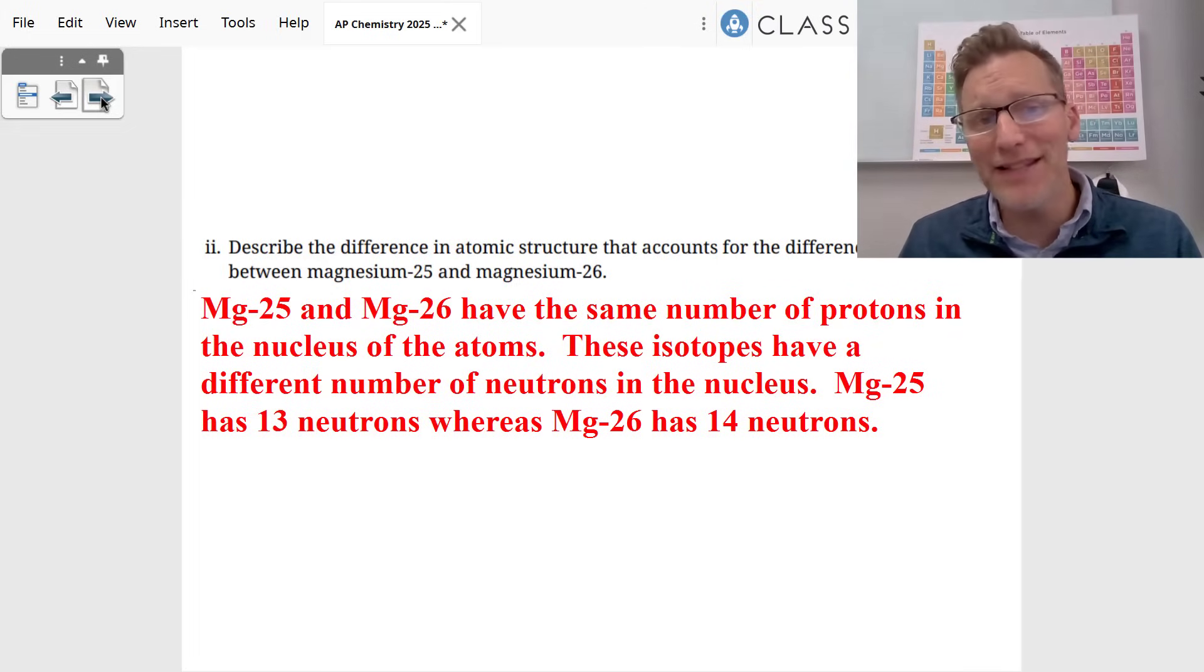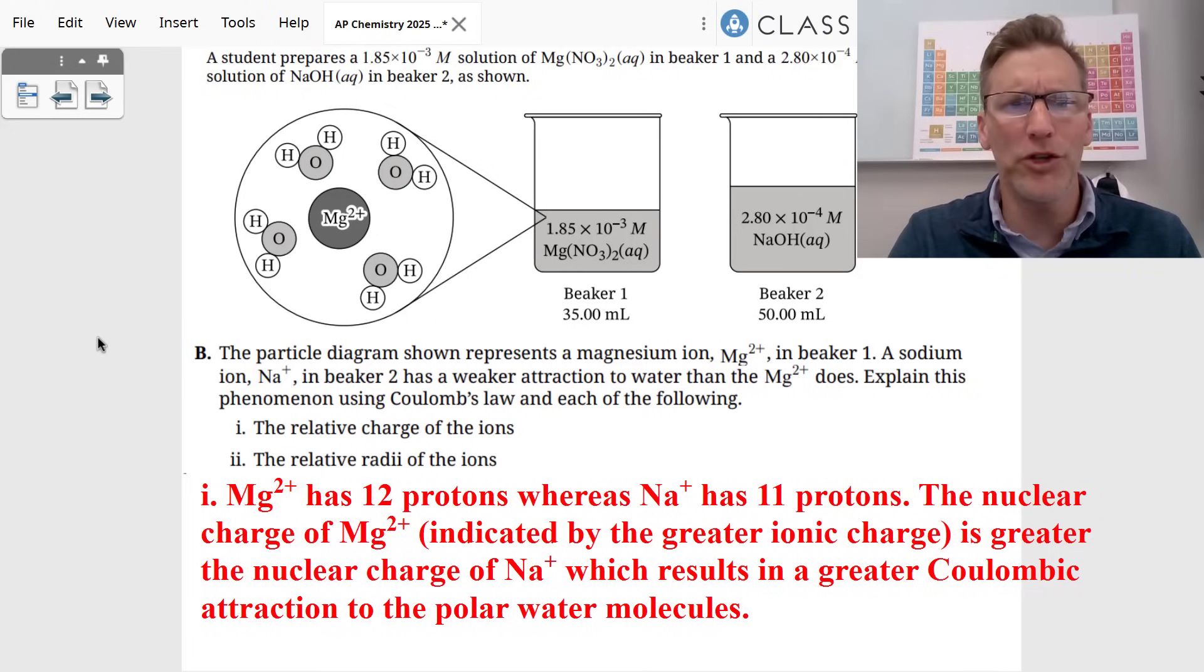Which moves us to part number two. It's asking us to describe the difference in atomic structure between magnesium-25 and 26. Obviously, these are isotopes. They have the same number of protons in the nucleus of the atoms, but magnesium-25 has 13 neutrons. Magnesium-26 only has 14 neutrons. Again, probably worth one point for your answer.